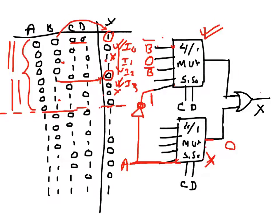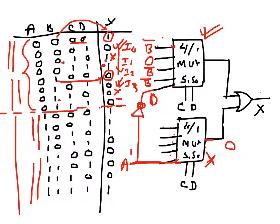Looking at the last input of the first MUX — it is one when B is zero and zero when B is one — so again this will be B-bar. Now moving to the second multiplexer: when A becomes one, the first MUX is disabled and the second MUX is enabled, so whatever inputs are applied here will pass to the output.